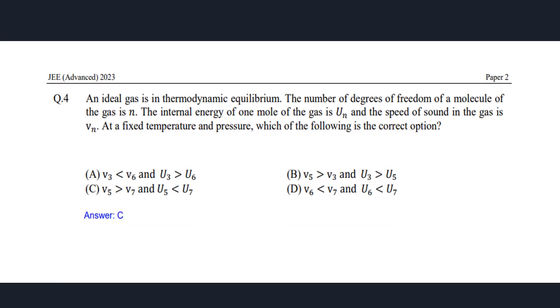v5 will be greater than v7, and U5 will be less than U7. So as you can see, internal energy increases as the degrees of freedom increase, and the speed of sound decreases as the number of degrees of freedom of the molecule increases. I hope you all understood it.